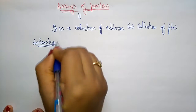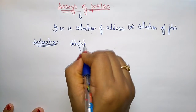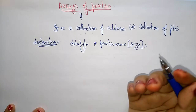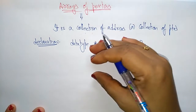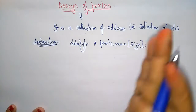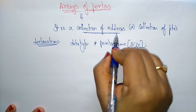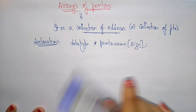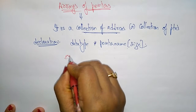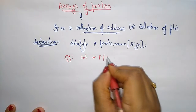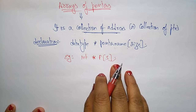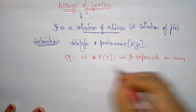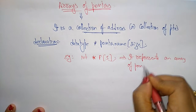Let's see how we declare arrays of pointers. The declaration is: data type, pointer name, and the size of the array. In the previous topic of arrays and pointers, we declared an array and assigned its base address to a pointer. Arrays of pointers, on the other hand, is a collection of addresses stored using a pointer name and a size.